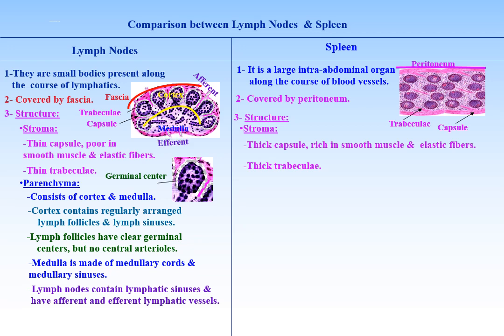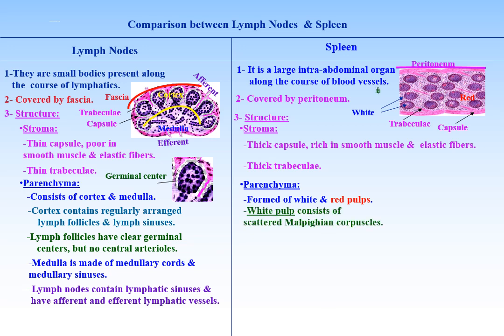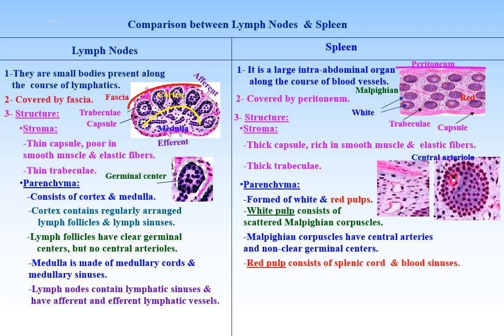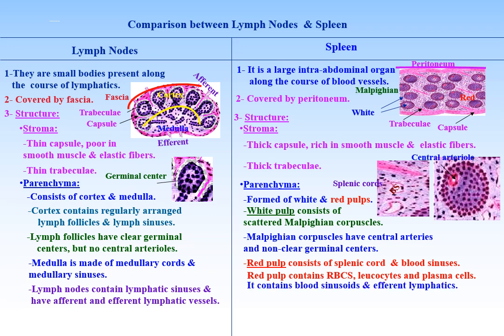Lymph nodes contain lymphatic sinuses and have afferent and efferent lymphatic vessels. Parenchyma of the spleen is formed of white and red pulps. White pulp consists of scattered malpighian corpuscles — lymphatic nodules having central arterioles and non-clear germinal centers. Red pulp consists of splenic lymphatic cords and blood sinuses, containing RBCs, leukocytes, and plasma cells. The spleen contains blood sinuses and has no lymph sinuses or afferent lymphatic vessels.